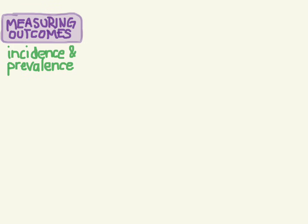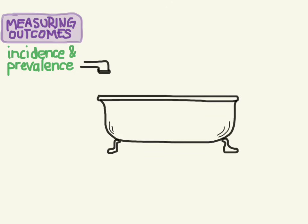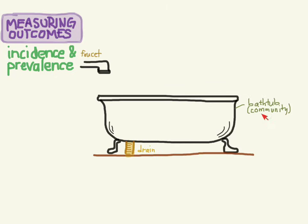Let's continue talking about measuring outcomes and incidence and prevalence, and let's see how these two are related. We're going to do this by taking an analogy of a bathtub. Here we've got a bathtub with the faucet, and this copper pipe represents the drain, and the bathtub represents the community.